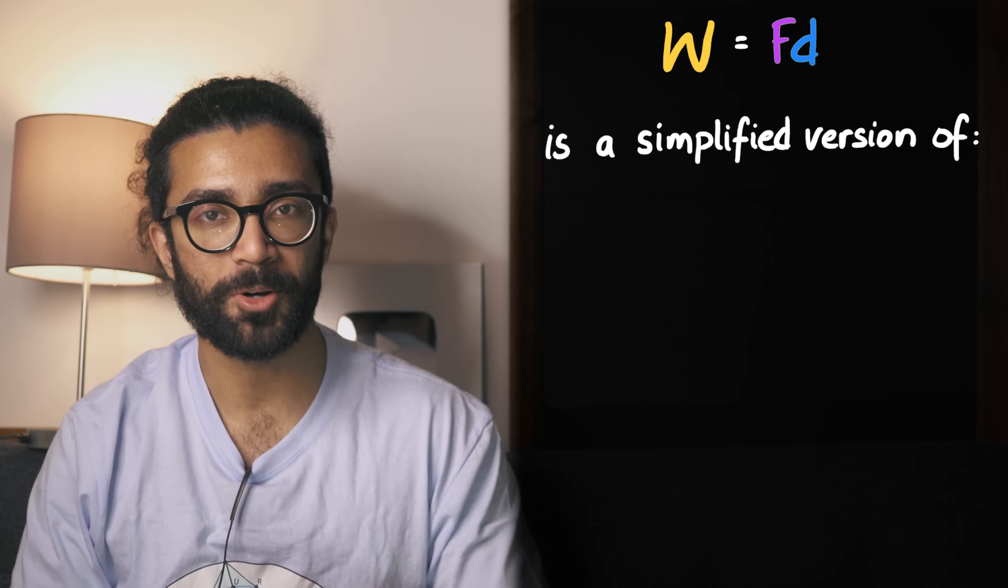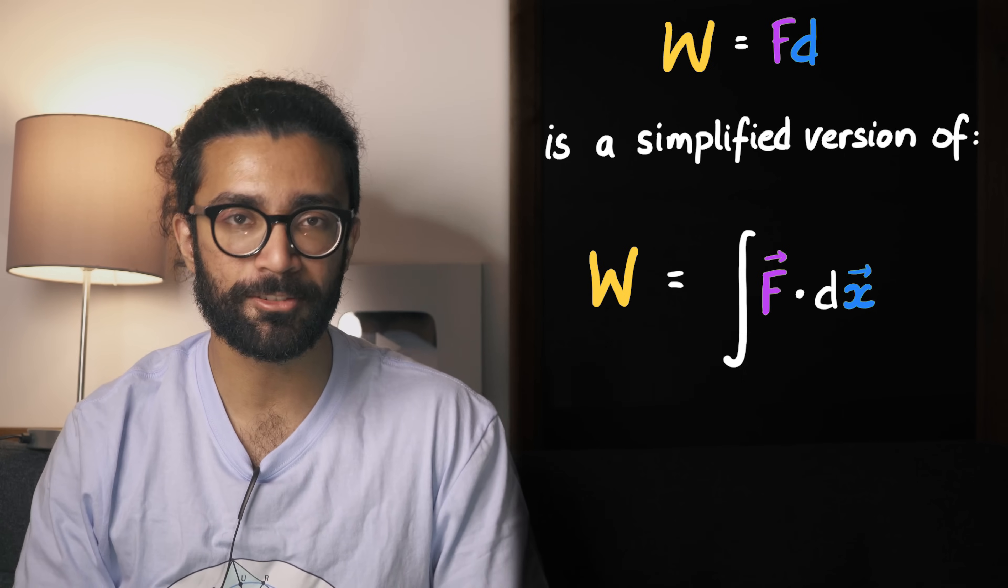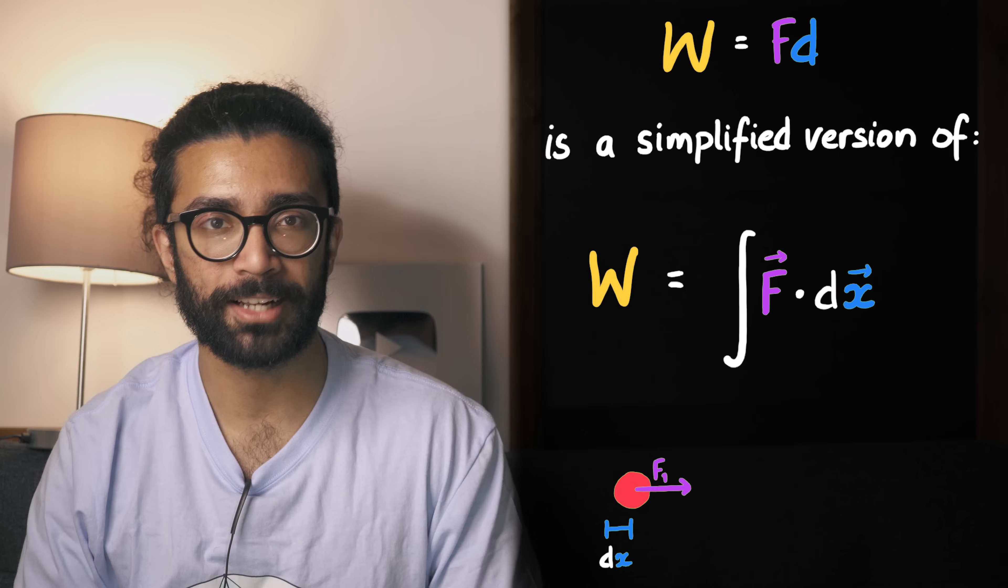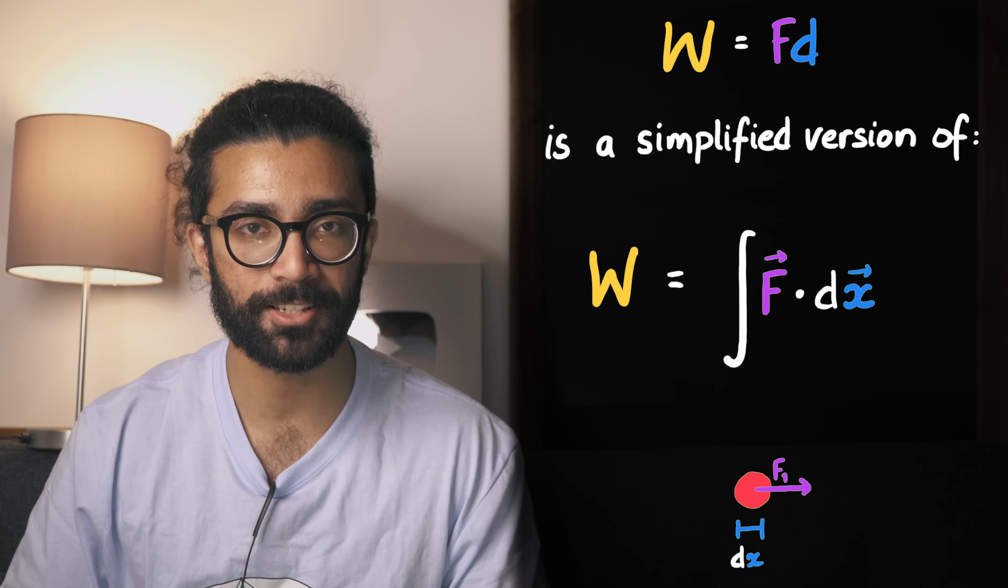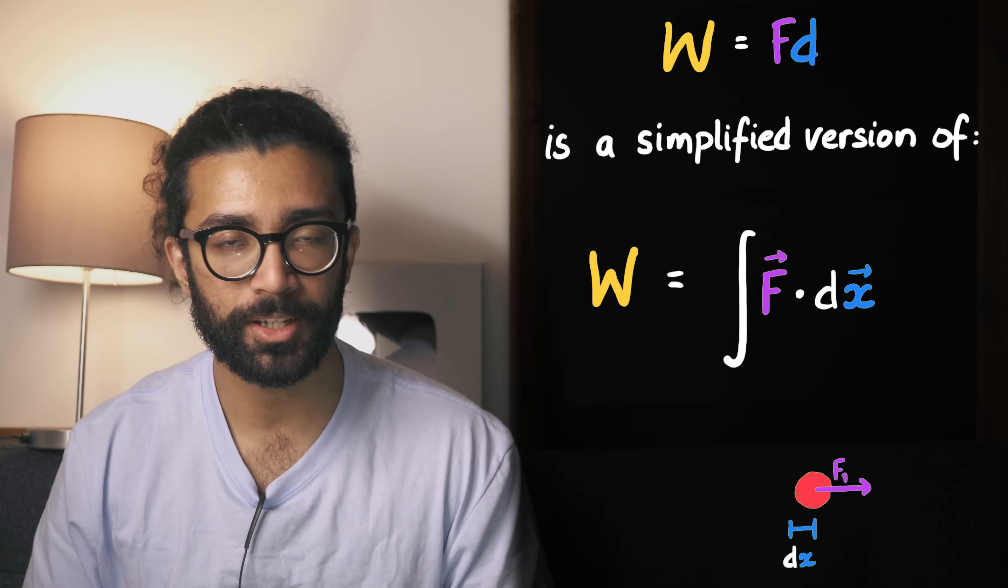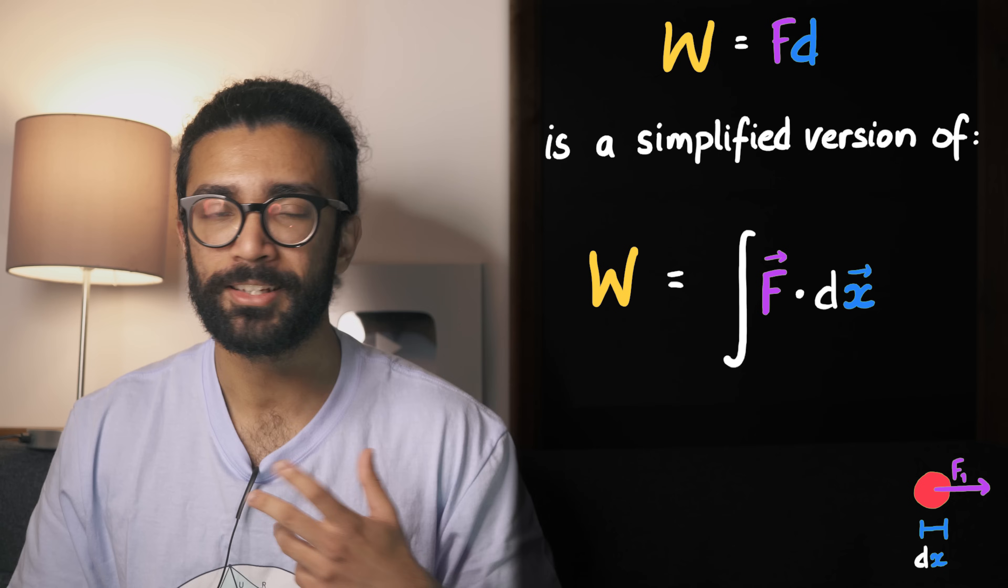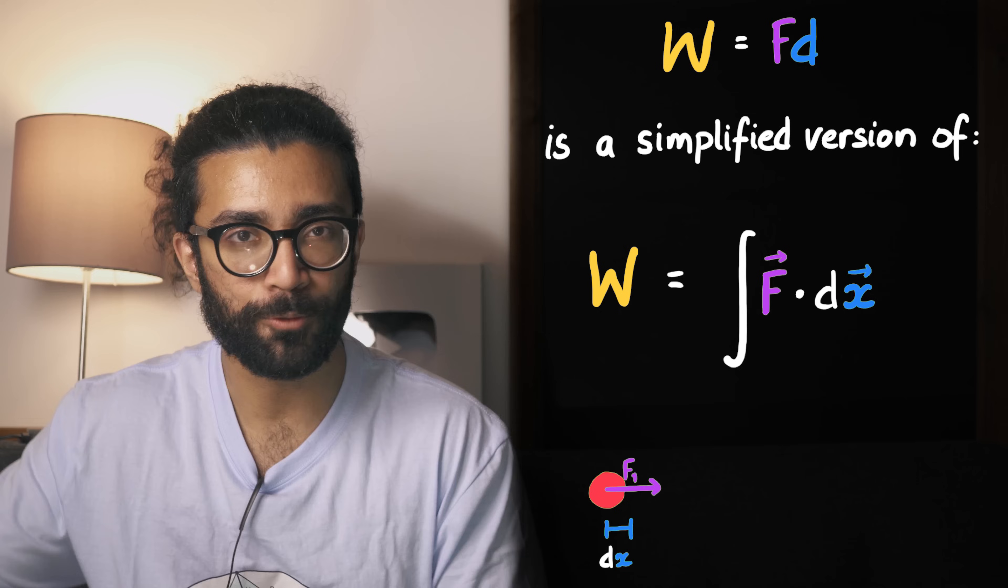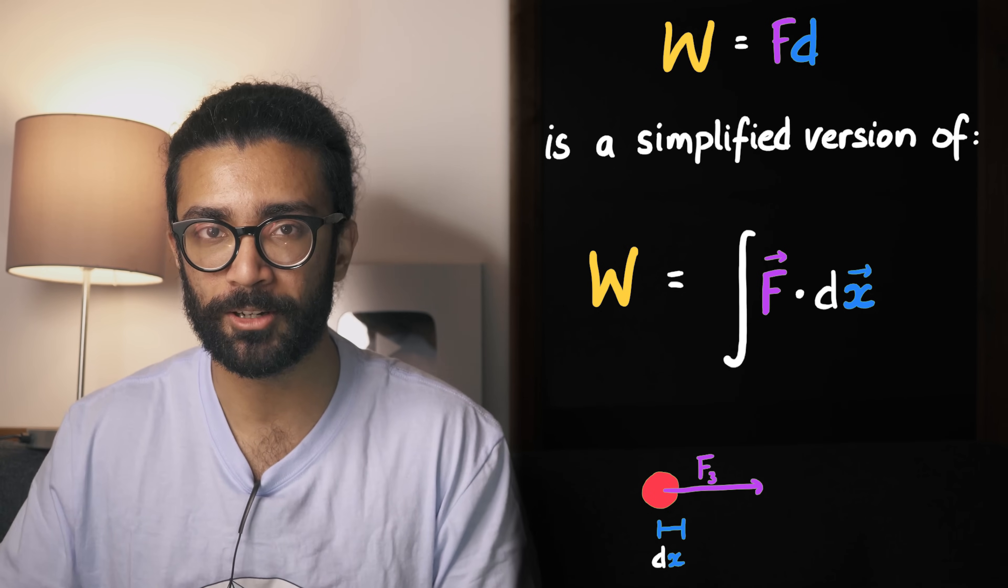However, this equation for work, is actually a simplification, of the true formula, which looks more like this. This is a bit more daunting, it's got an integral sign in it, but essentially, it just breaks down, the motion of our object, into extremely tiny chunks. Infinitesimally small, in fact. And at each point, along the journey, we find the force exerted, multiplied by the small distance moved. This is a more general formula, because it allows us, to account for, potentially, any changing force, over time, as well as being, more mathematically correct, in ways that we won't go into here.